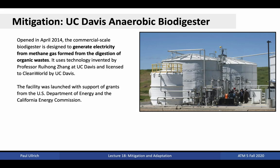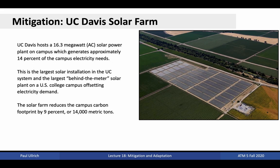Here at UC Davis, we have a couple examples of mitigation in action. The UC Davis Anaerobic Biodigester was opened in April 2014 in order to generate electricity from methane gas formed from the digestion of organic wastes. Effectively, compost and food waste is used by the biodigester to generate heat, which is harnessed for electricity generation. UC Davis is also host to the largest solar installation in the UC system and the largest behind-the-meter solar plant on a U.S. college campus. However, the solar plant only covers around 9% of the total campus carbon footprint.